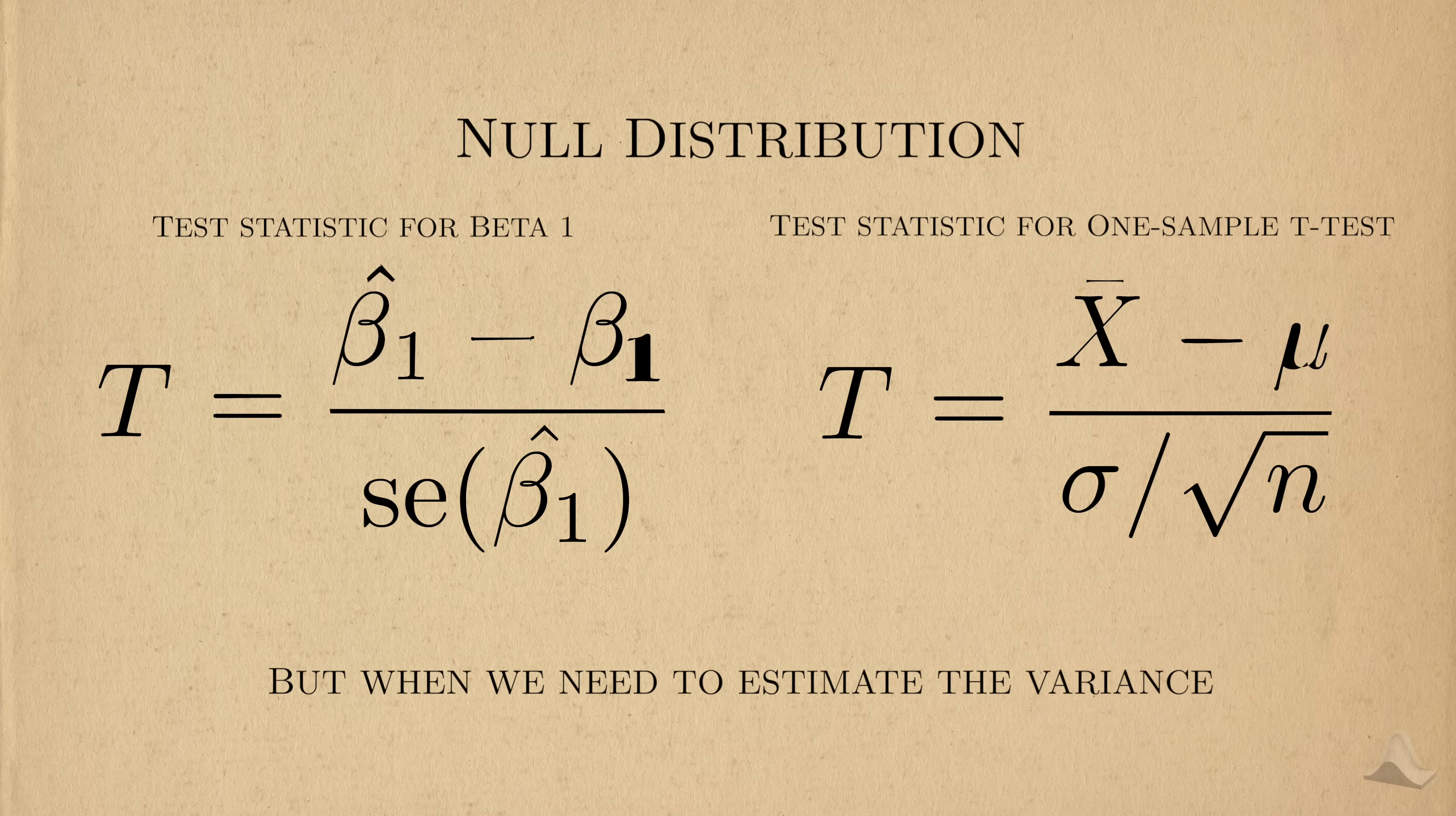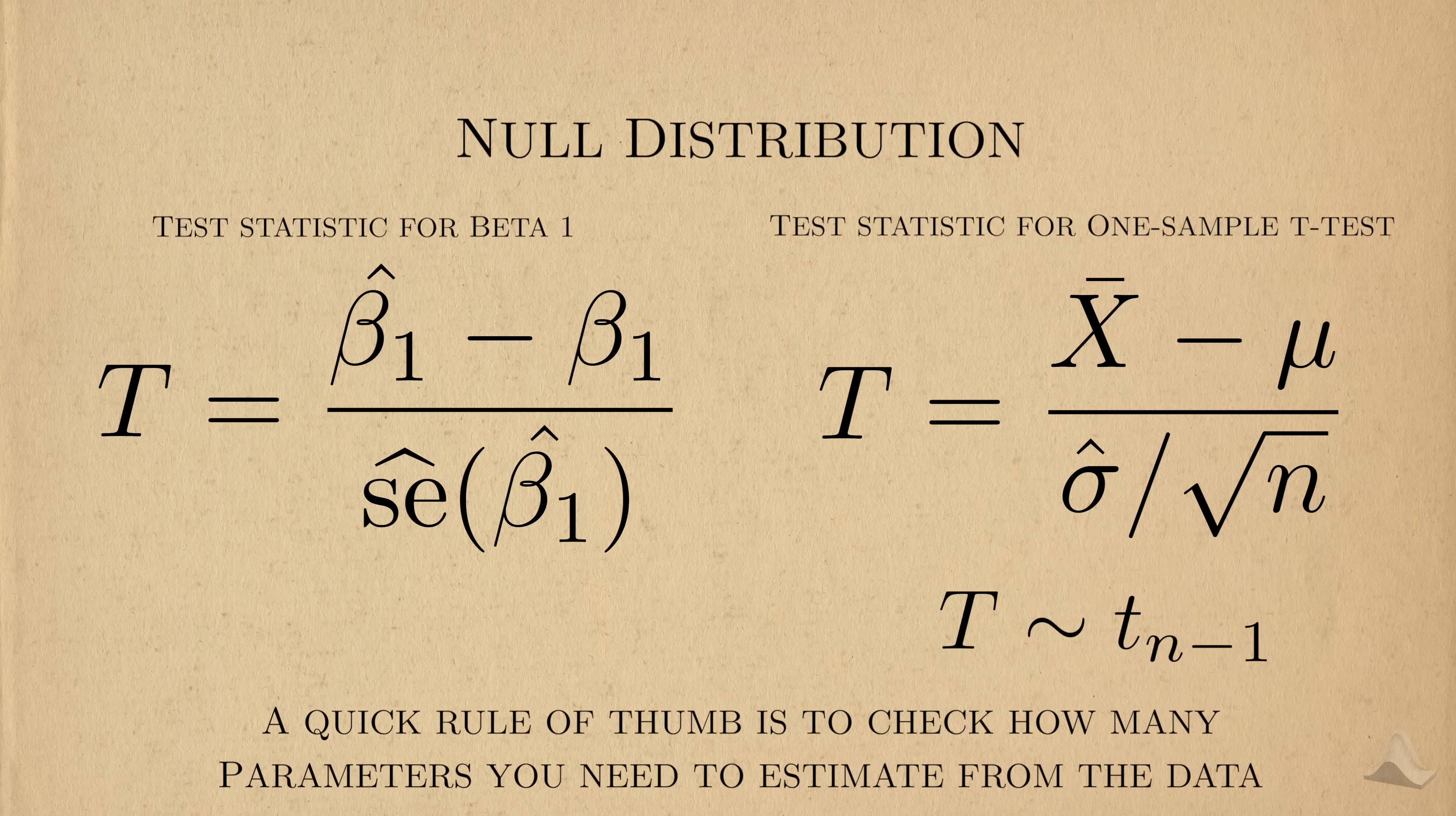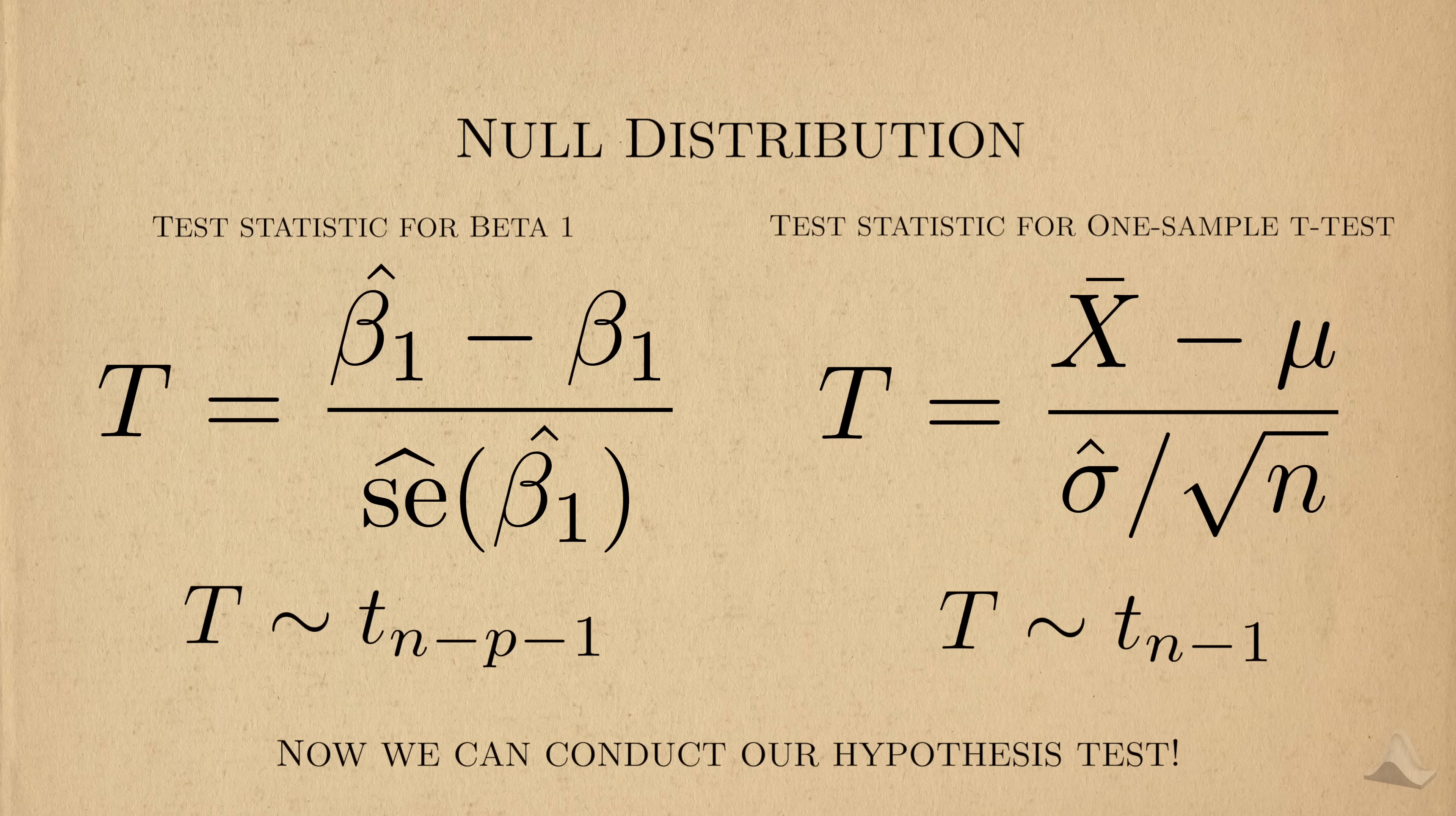But when we have to estimate the variance, as we have here, then we get a t-distribution. All we need to figure out is its degrees of freedom. Remember that from the one sample t-test that the t-statistic has a t-distribution with n minus one degrees of freedom. We have to subtract one because a degree of freedom is spent estimating the sample mean from the data. A good rule of thumb for quickly checking the degrees of freedom for a Wald statistic is to check how many parameters you need to estimate from the data. Then you subtract this number from n. The number of parameters we need to estimate is p plus one. So the corresponding degrees of freedom is n minus p minus one. With all of these ingredients, we can perform a hypothesis test on beta one.